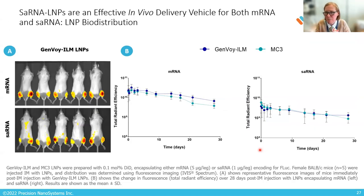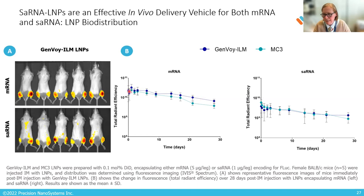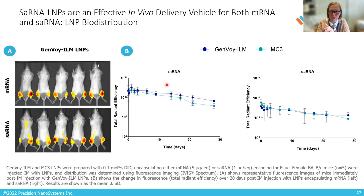Looking at where the LNPs are going: we inject both legs with five micrograms of mRNA, and this coloring shows us where the LNPs have been. With both mRNA and self-amplifying RNA, the LNPs sit at the injection site at the leg and slowly clear. It doesn't matter which LNP platform you're using — very similar profile. Self-amplifying and mRNA have the same clearance profile. So once they're in the LNPs, clearance from the injection site is the same — we're seeing the same pharmacokinetic clearance regardless of payload.